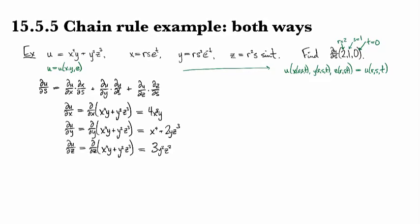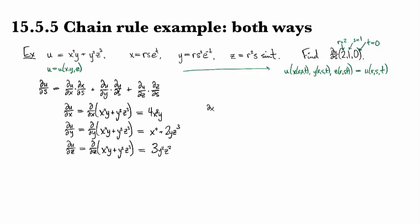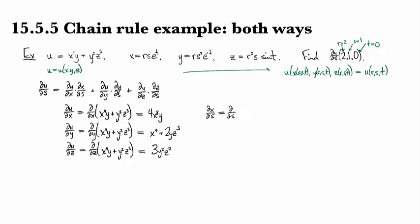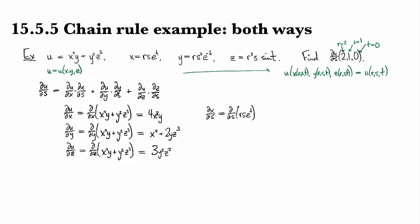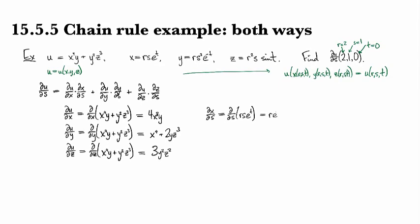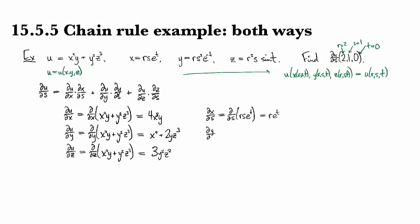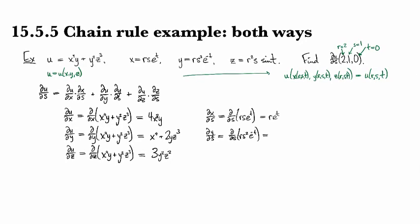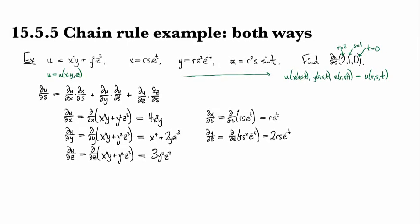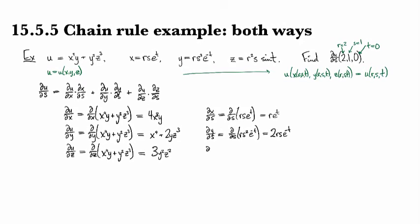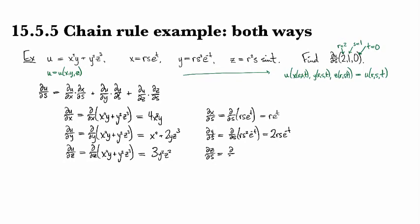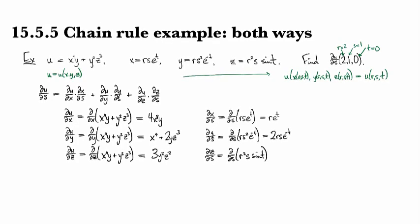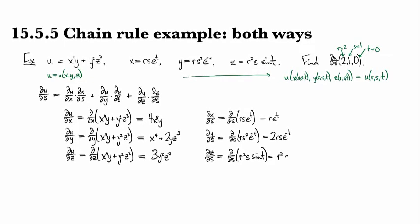Okay, then I still have to do dx/ds. So that's going to be derivative with respect to s of the thing I was given for x, which is rse to the t. And so that's going to be re to the t. And dy/ds, and y was rs squared e to the minus t. So differentiating, I get 2rse to the minus t. And then for the last one, I've got dz/ds. And my formula for z was r squared s sine t. So differentiating with respect to s, I get r squared sine t.